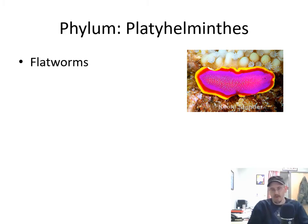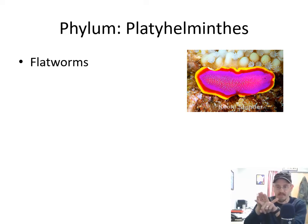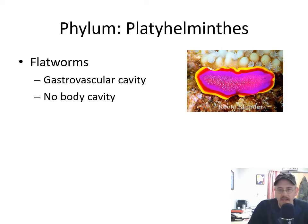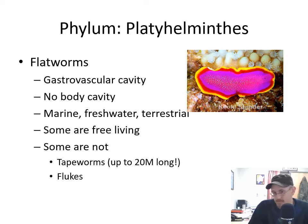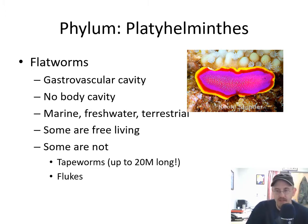Platyhelminthes — we've seen these in lab. These are the flatworms. They have a flat body, which increases their surface area-to-volume ratio. They have a muscular pharynx that can come out — it's the entrance to the gastrovascular cavity that they eat with. They don't have a body cavity full of organs — just a digestive gut. They are marine, freshwater, and terrestrial. Many are free living, but some are parasites. Tapeworms are in this group and can be up to 20 meters long. Flukes, a type of parasitic flatworm, are also in this group. Parasitic forms won't have a muscular pharynx because they live inside another organism.